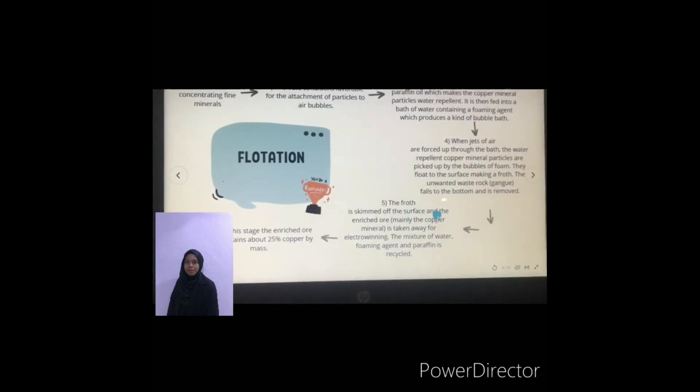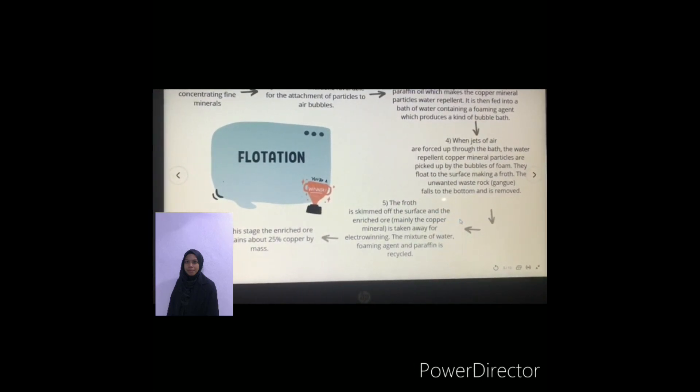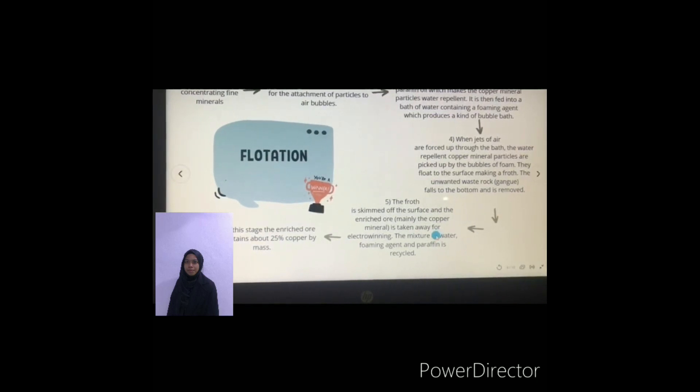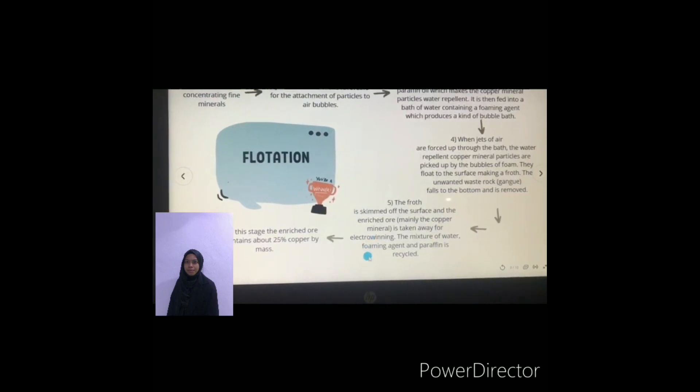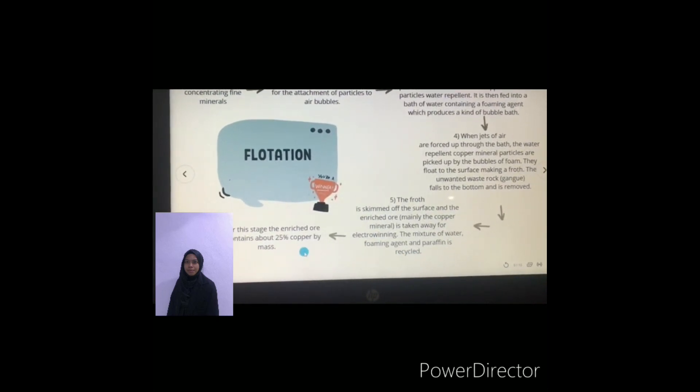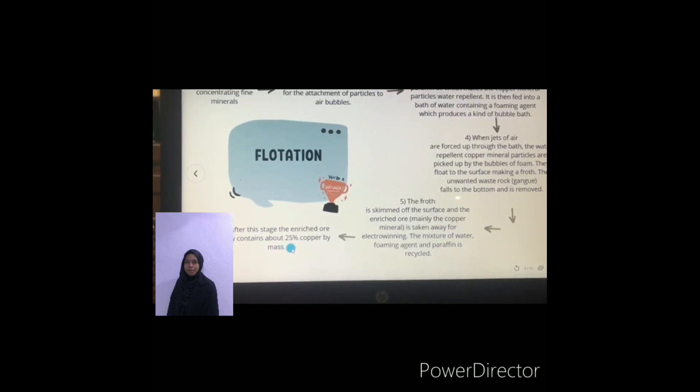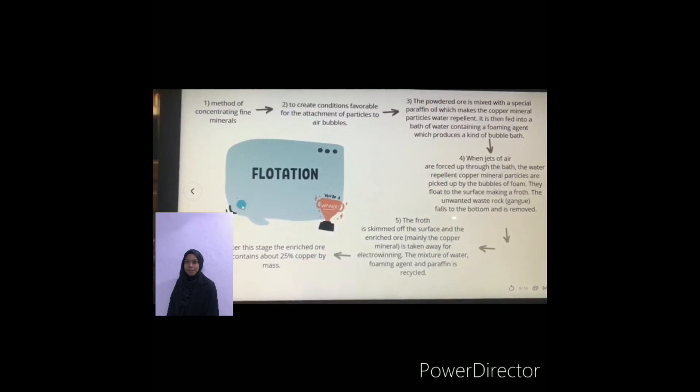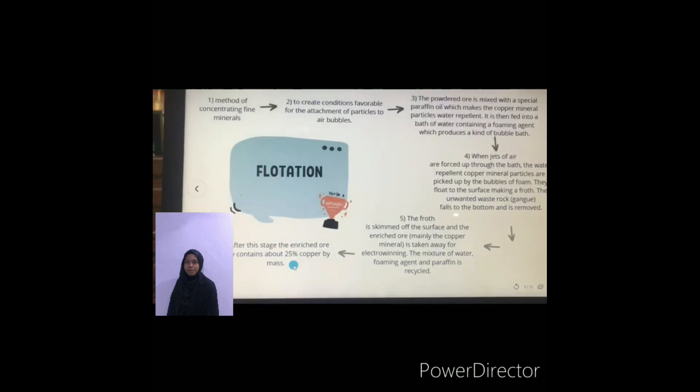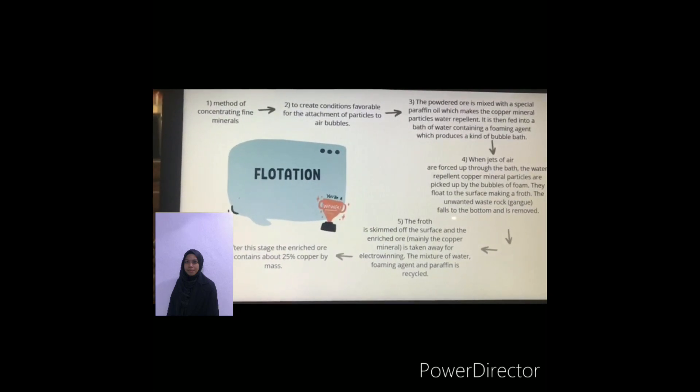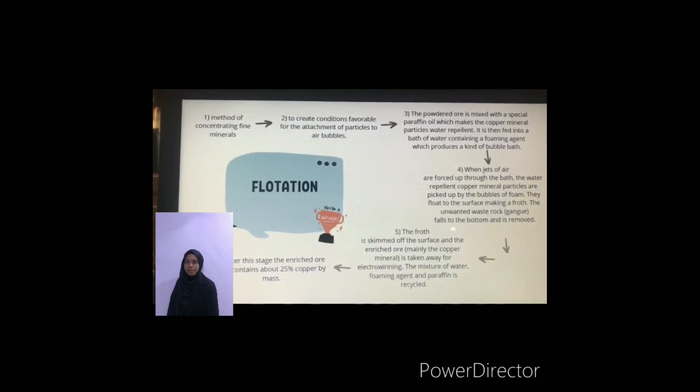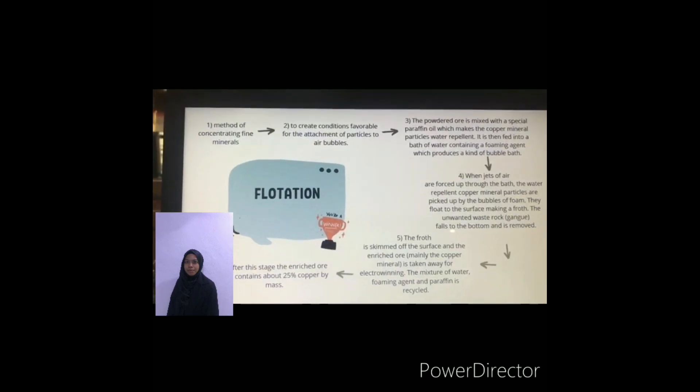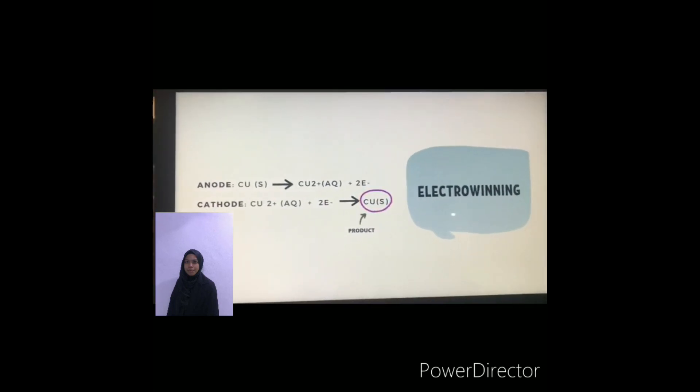The froth is skimmed off the surface and the enriched ore mainly the copper mineral is taken away for electrowinning. The next process is electrowinning. The mixture of water and paraffin is recycled. After this stage, the enriched ore now contains about 25% copper. The next process and the last process is electrowinning.